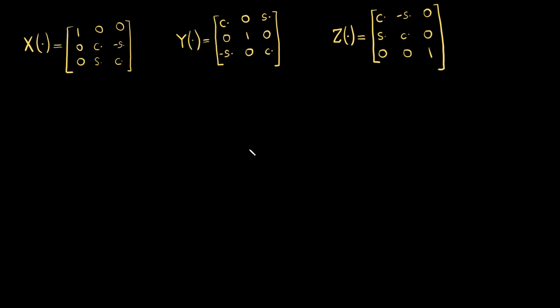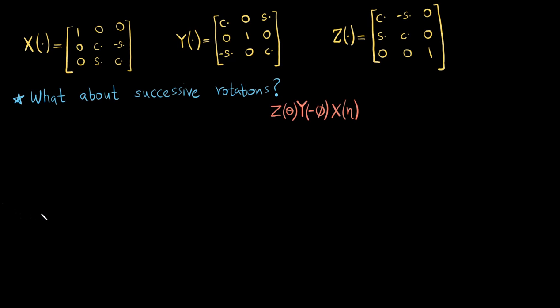This is our second part on our video on rotation matrices. On the top I have written the three rotation matrices about the x-axis, y-axis, and z-axis, or we call them the x rotation matrix, y rotation matrix, and z rotation matrix. In the previous video we discussed what happens when we have a point which rotates about one of the axes — either about x, y, or z.